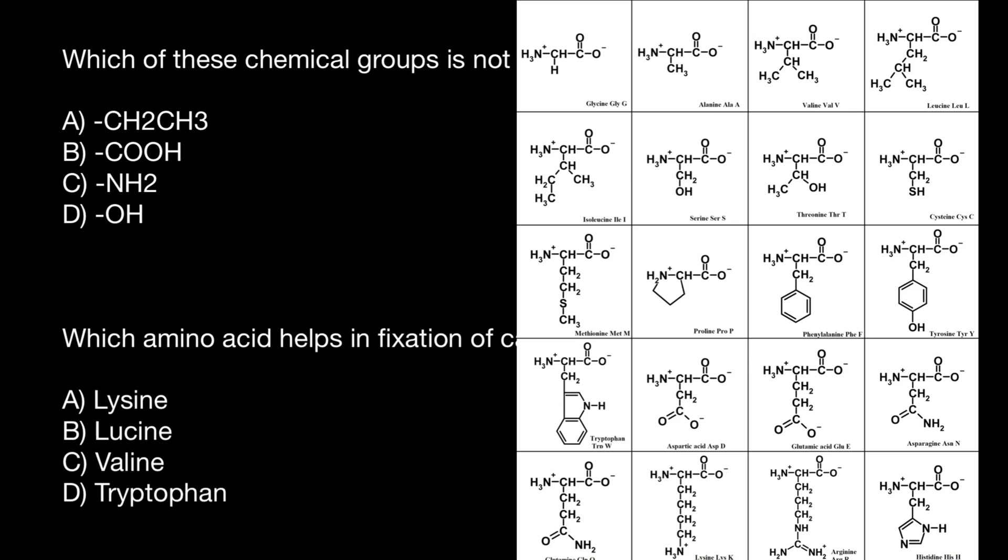And the last group, answer D, this is alcohol. We can find this also in our chains of some amino acids. Under normal physiological conditions, such groups are going to be non-charged, but if pH is going to change,